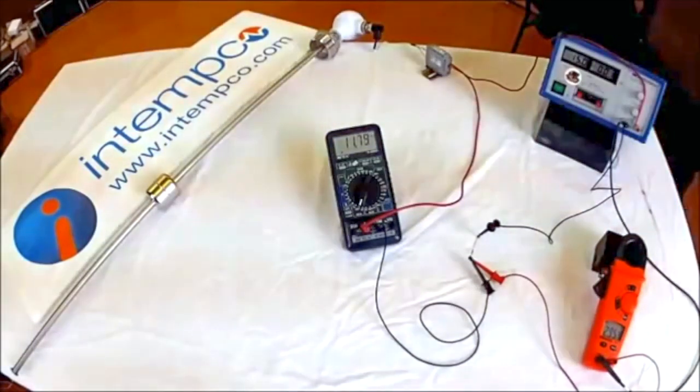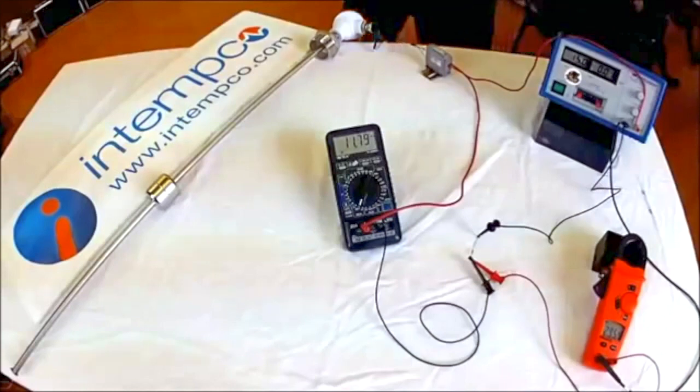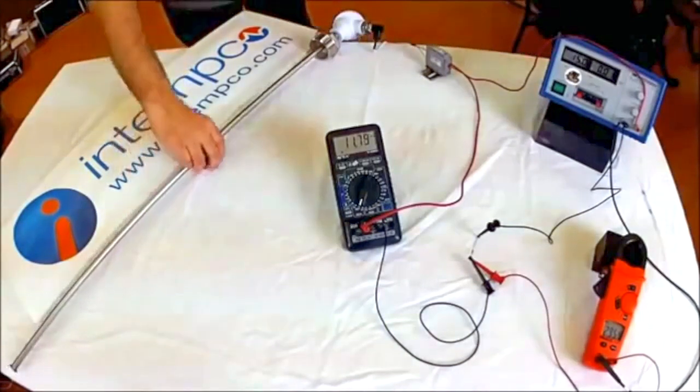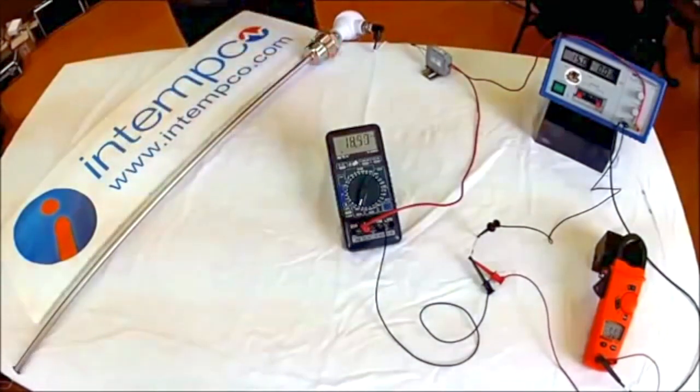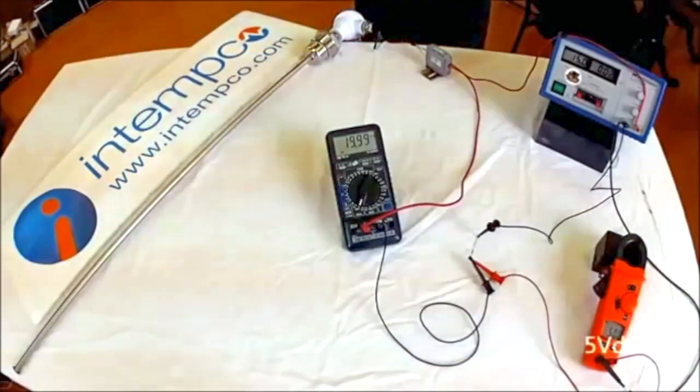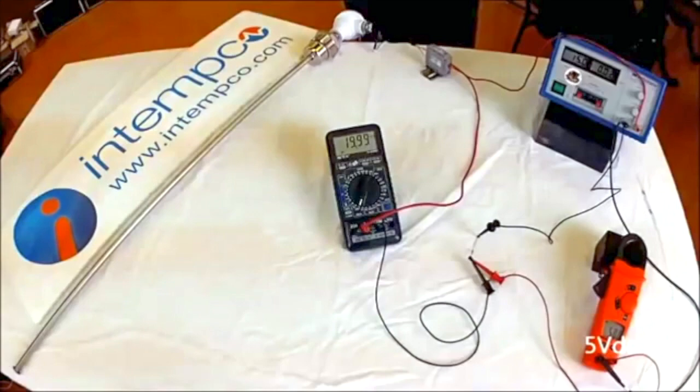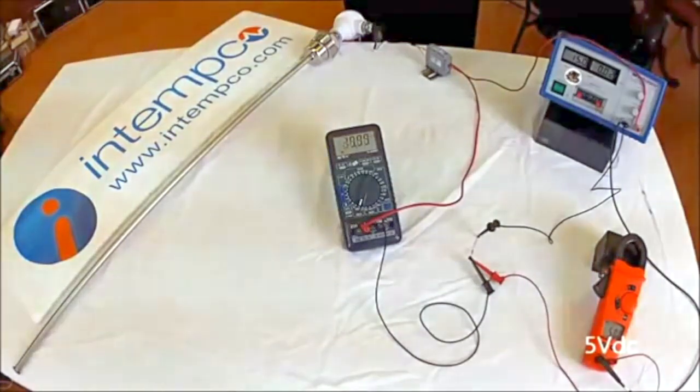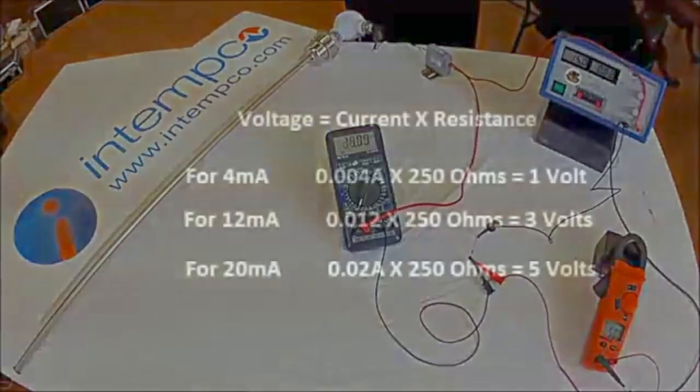If we change the position of the float to the top, it will indicate 20 milliamps. You can see the voltage drop changes to 5 volts. So 20 milliamps or 0.02 amps times 250 ohms equals 5 volts.